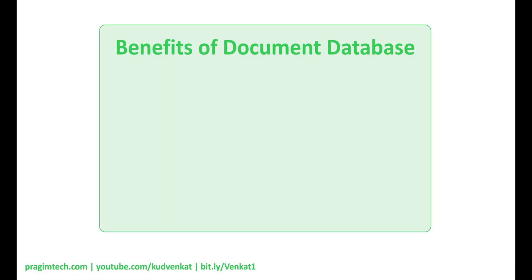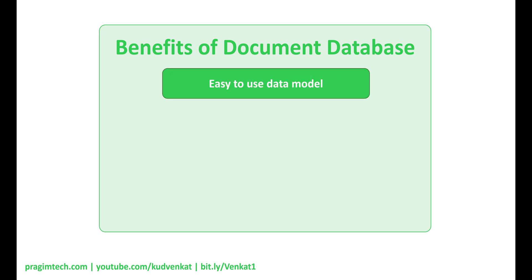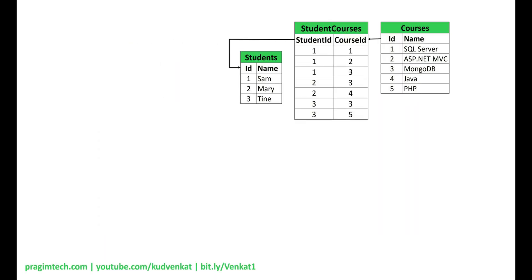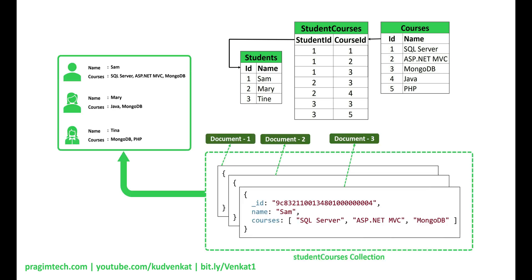Let's focus on the benefits of using a document database. It has an easy-to-use data model. In a document database like MongoDB, we do not have tables and rows — instead we have collections and documents. The data that we typically store across many relational database tables can be stored in a single collection. For an application, this data is very easy to work with — no complex joins and mapping layers are required, and our application code will be much cleaner, simpler, and easier to maintain.